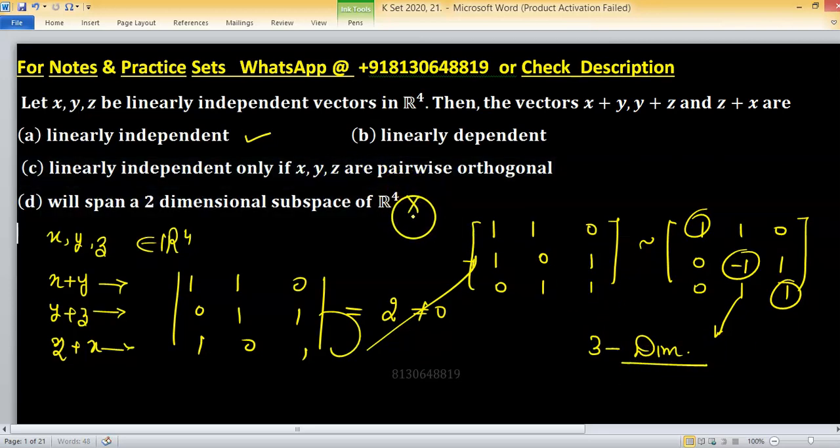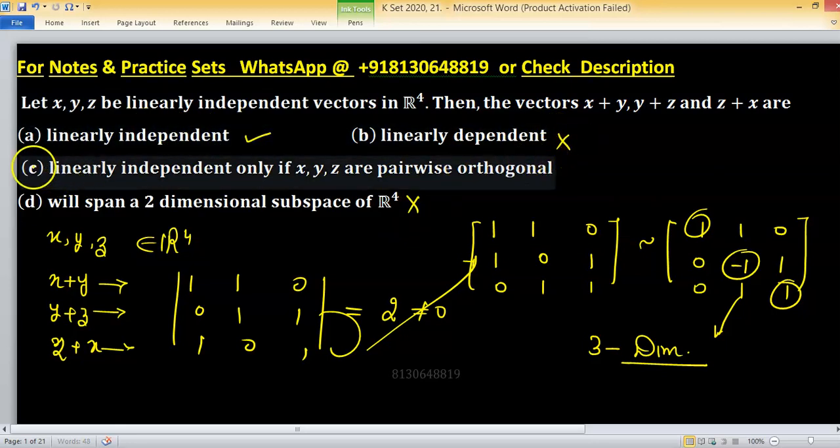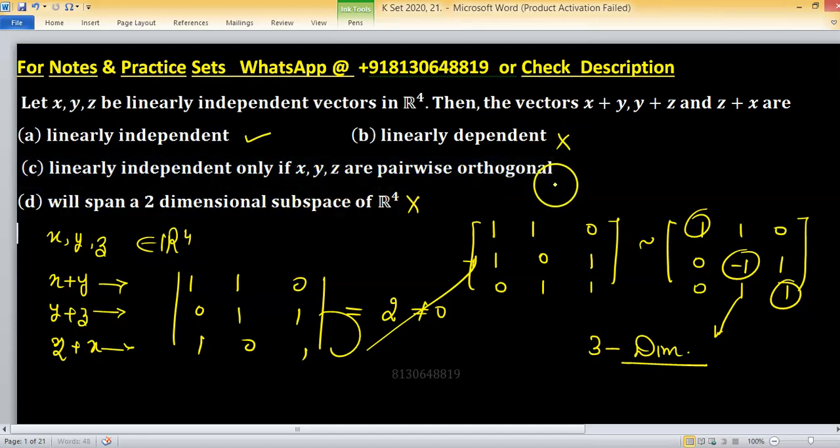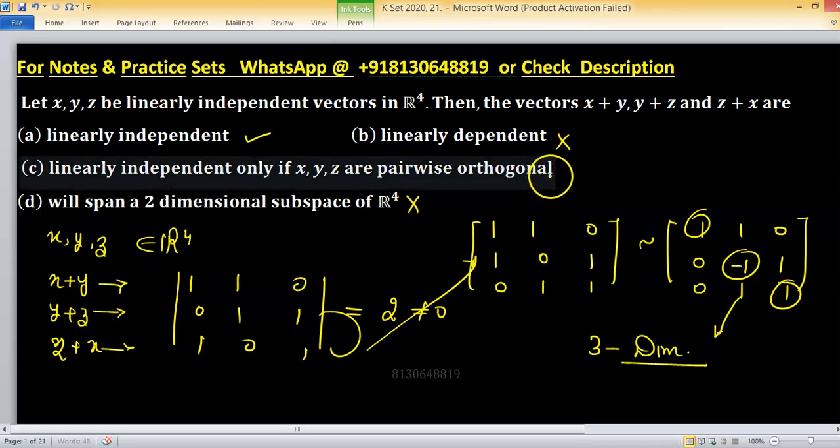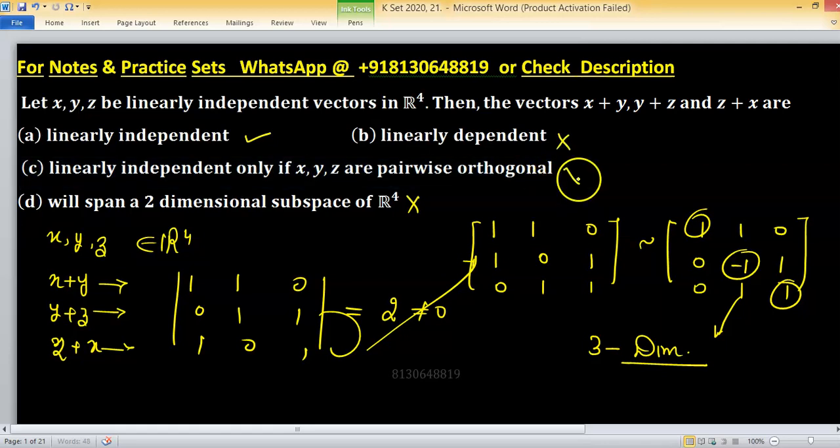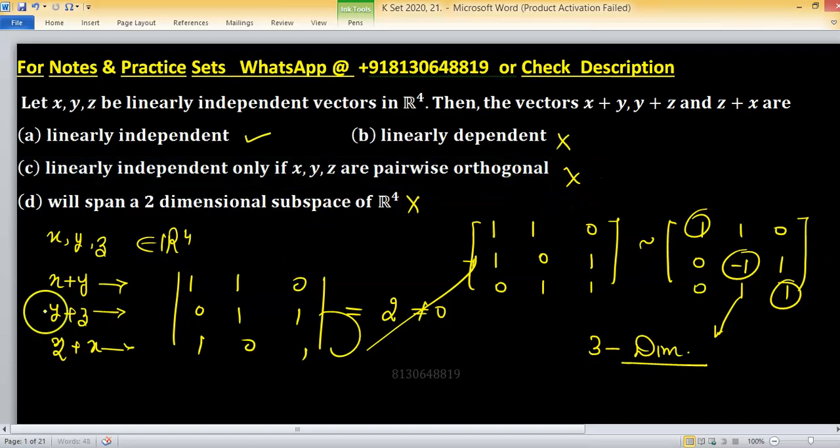So option D is wrong because they are linearly independent. That's why option B is wrong. And option C says linearly independent only if XYZ are pairwise orthogonal. So dependency does not depend on orthogonal or not, so again this option becomes wrong. So the right one is option A.